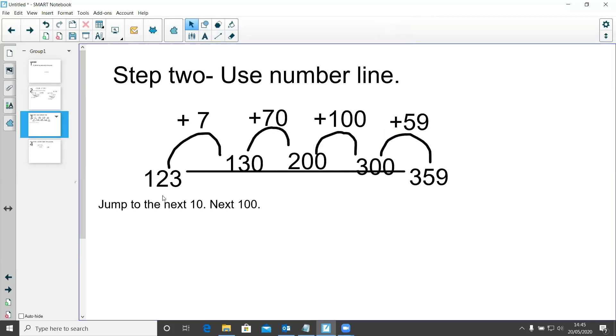Okay, now that I have jumped up from 123 to 359, I have all of my numbers here that I need to add up, so I'm simply going to do that in a column addition. So now that I have set up my column, I am going to start with my ones column. 9 and 7 is 16, so I'm going to put my 6 there and carry my 1 down the bottom.